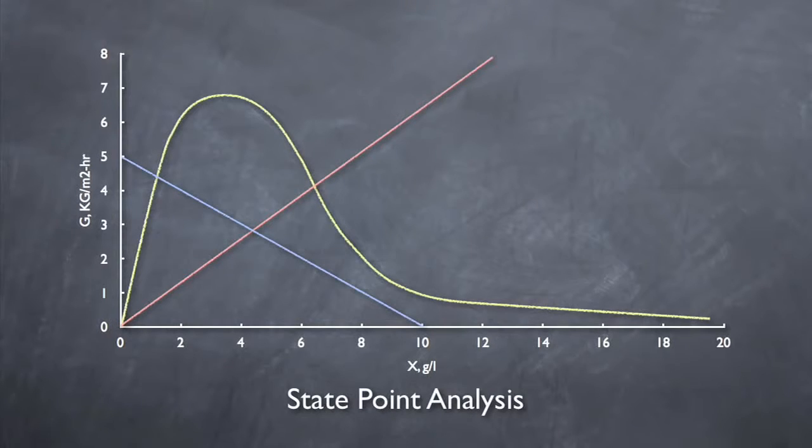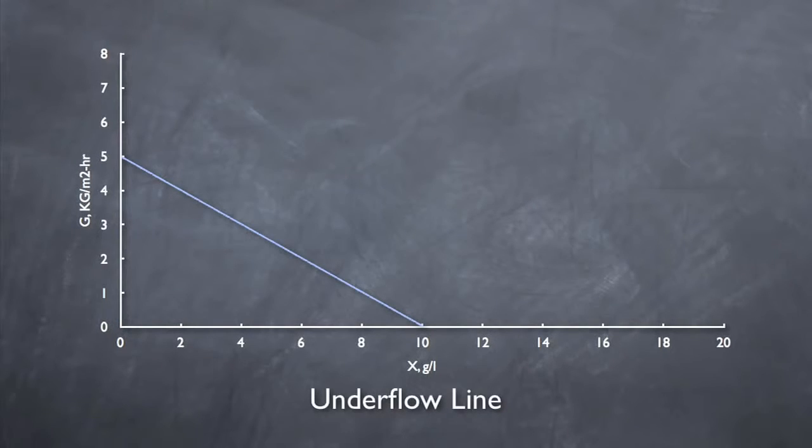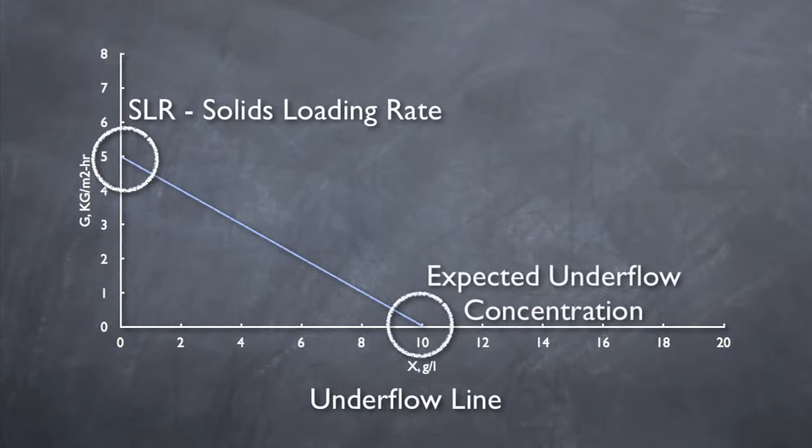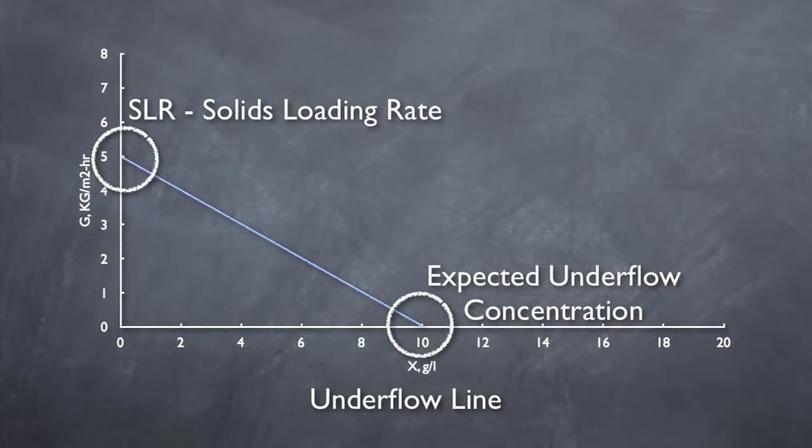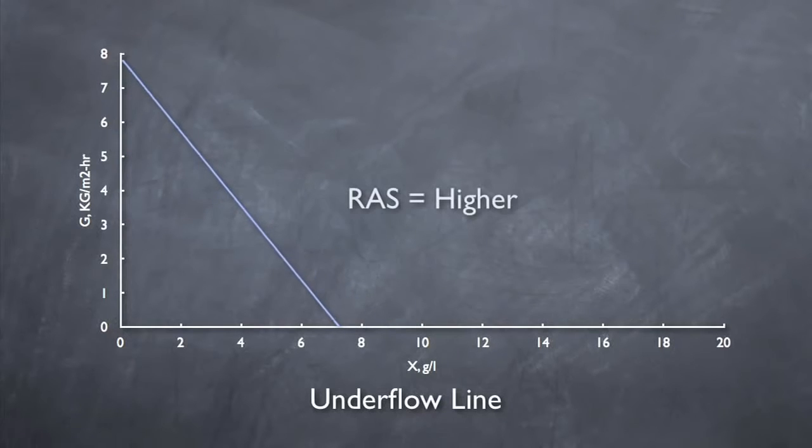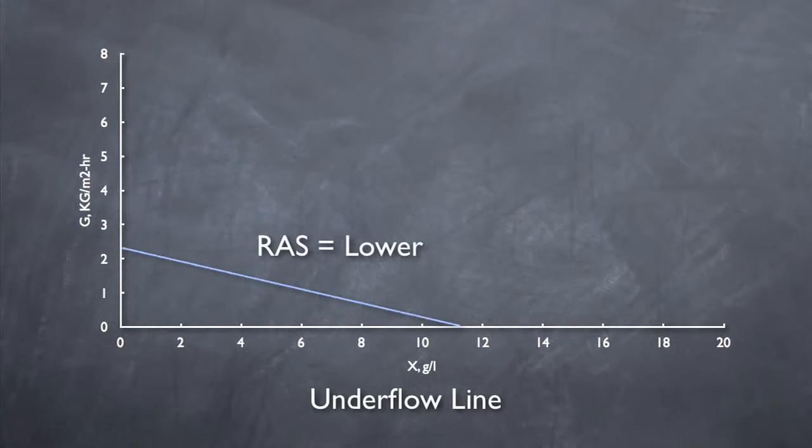The third and final component of the state point diagram is the underflow line. The y-intercept of this line represents the solids loading rate, or SLR. The x-intercept of this line represents the expected underflow concentration. The slope represents the solids underflow rate, or SUR, which is calculated by dividing the RAS flow by the clarifier surface area. This line can be adjusted in two ways. First, by changing the RAS rate, you can affect the slope. A higher RAS rate will result in a steeper slope down. A lower RAS rate will result in a flatter slope.